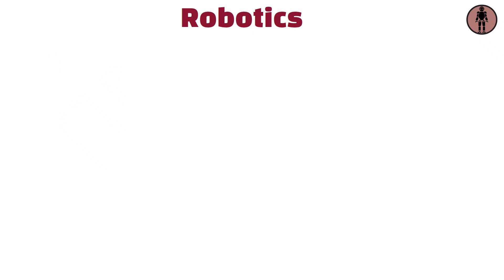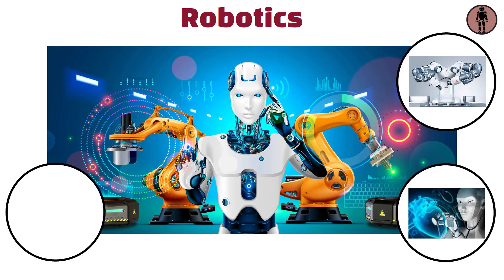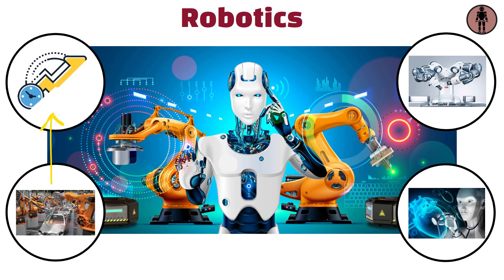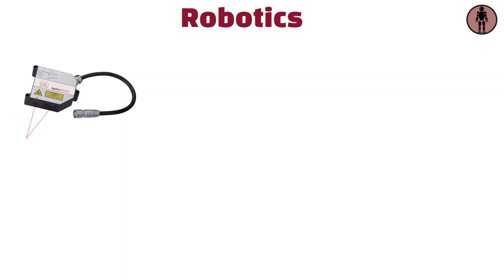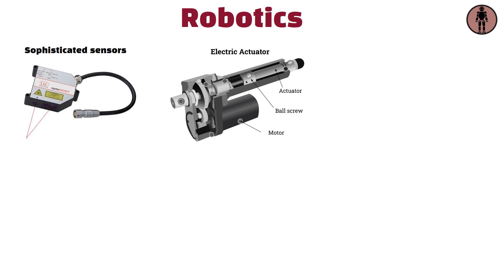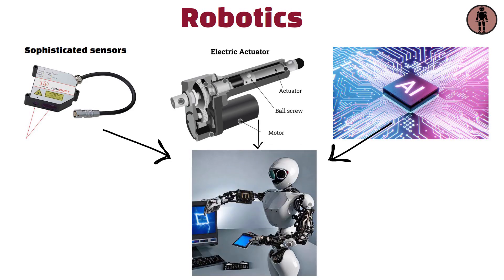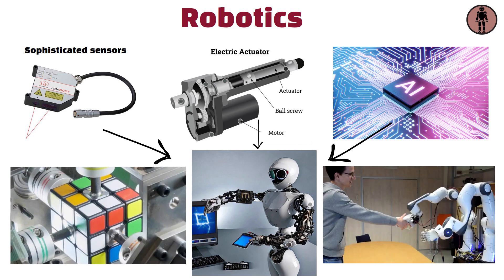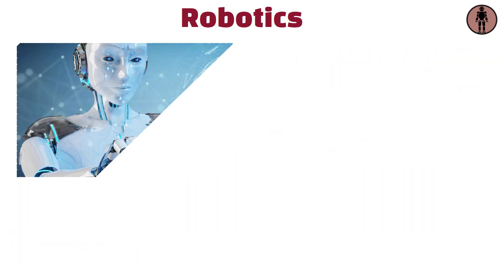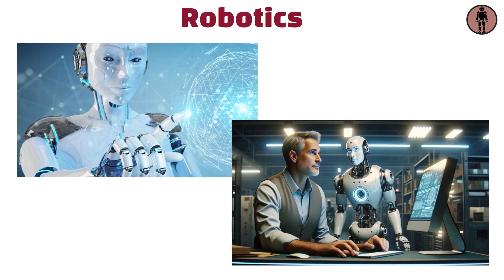Robotics. Advances in robotics have transformed manufacturing, healthcare, and other industries. Industrial robots have increased productivity and precision in factories, while medical robots assist in surgical procedures and rehabilitation. The development of more sophisticated sensors, actuators, and artificial intelligence has enabled the creation of robots that can navigate complex environments, interact with humans, and perform a wide range of tasks. As robotics technology continues to evolve, it has the potential to revolutionize the way we work and live.